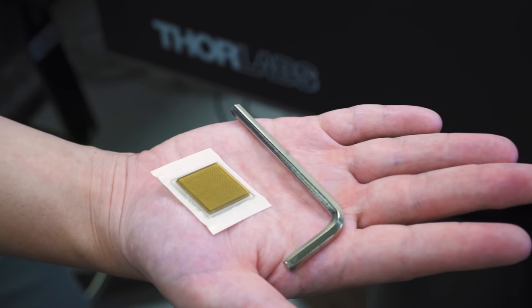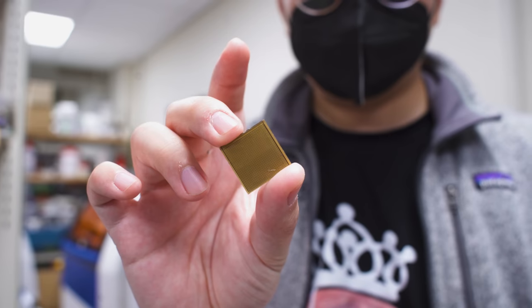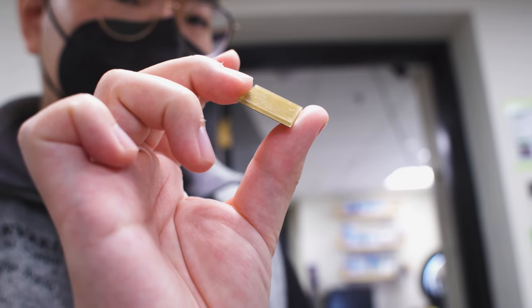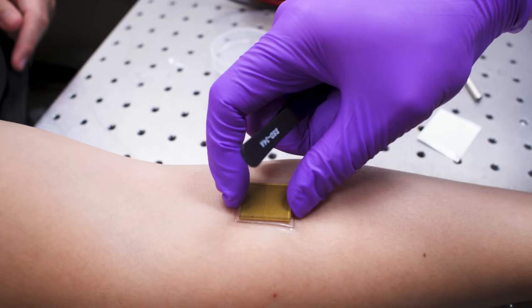The entire ultrasound sticker measures about 2 cm² across and 3 mm thick, about the area of a postage stamp.